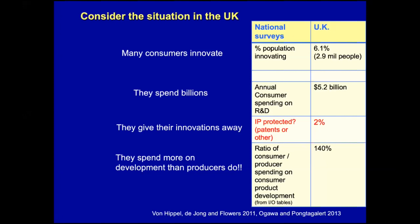When we ask very carefully and conservatively, we're interested in: did you come up with something new that is functionally better than anything else on the market - not just something more stylish. That's what our metrics are about. 6.1 percent of the UK population is 2.9 million people. Remember, all the policy around patenting and R&D subsidies is oriented towards producers - but in the UK, these 2.9 million users are spending billions of dollars collectively, actually more than producer companies spend. And 2.9 million is over a hundred times more innovators than are contained in all the firms producing products for consumers.